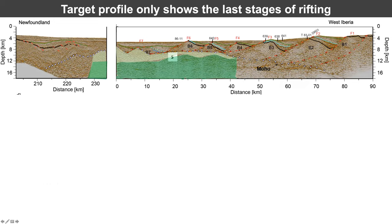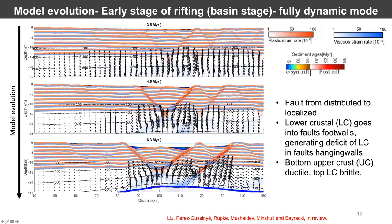This is our target seismic line, which only shows the last stages of extension. To simulate the first stages of extension, we just run the model in a fully dynamic mode. Here we see different time steps during the model run. These bands show how the upper crust is deformed: in red we have brittle strain rate, in blue we have ductile strain rate. These arrows show the direction of movement of the lower crust with respect to the upper crust, and the blue line is the Moho. Importantly, the deformation changes from distributed to localized in a few large faults, and the lower crust always flows into the footwall of the main penetrating faults.